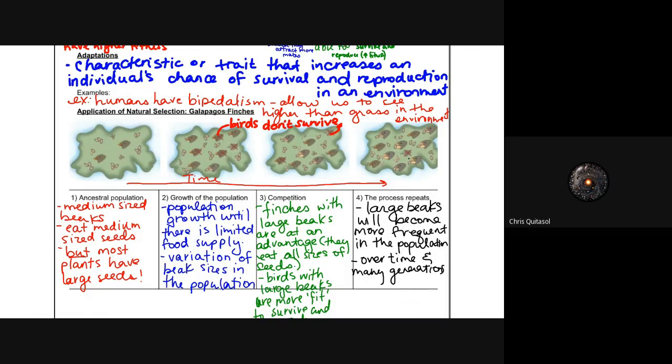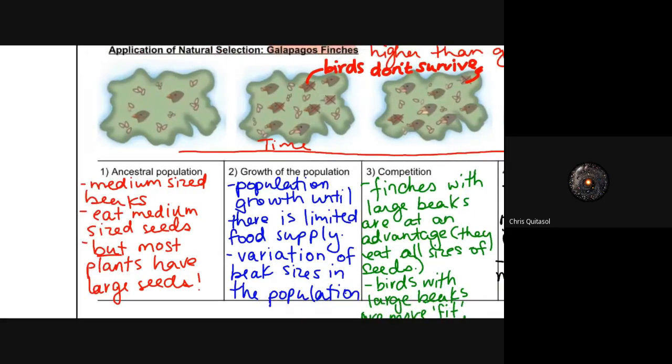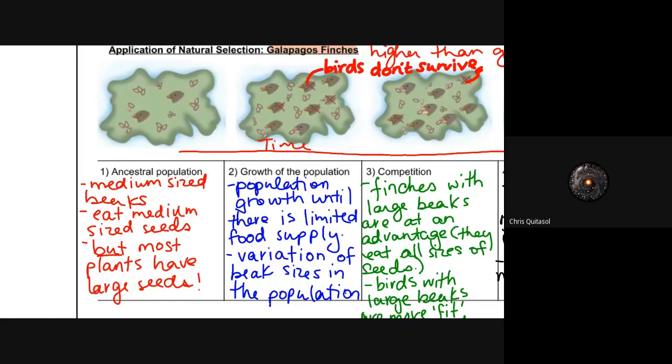Another concept with regards to adaptations is the consistent idea with Darwin and what he observed in the Galapagos finches. This is something I'm going to bring up quite often with regards to these lessons. When we look at that first window, when the ancestral population of finches first arrived in the Galapagos, they had what's called medium-sized beaks. They ate medium-sized seeds and had enough food, but they didn't really because most plants in the Galapagos have larger seeds. So this original ancestral population had some food but didn't quite have access to the vast majority of food available on the island.